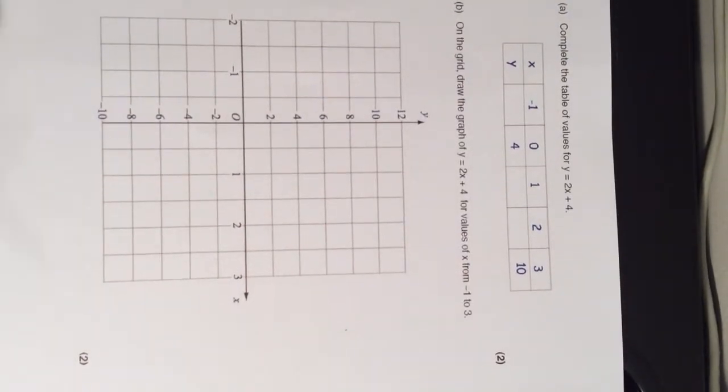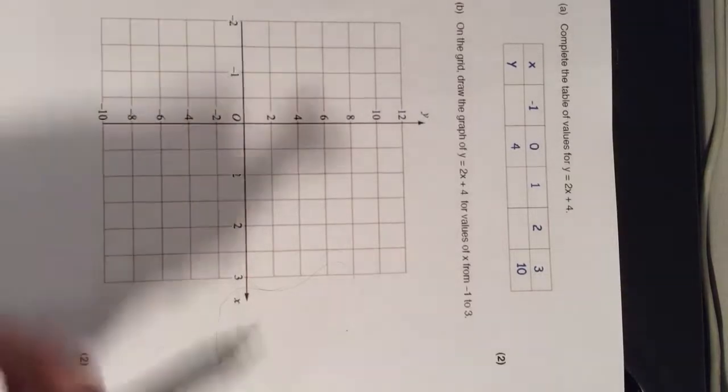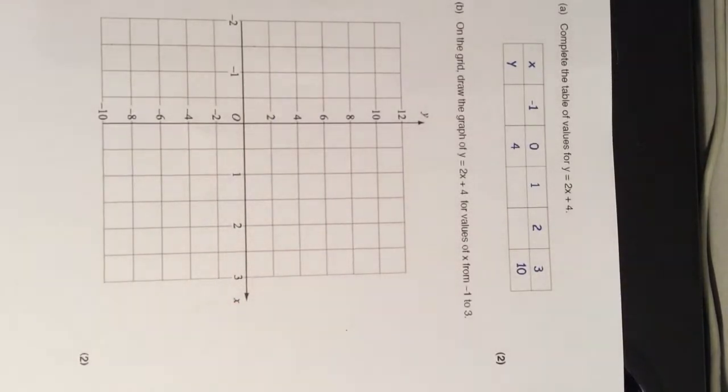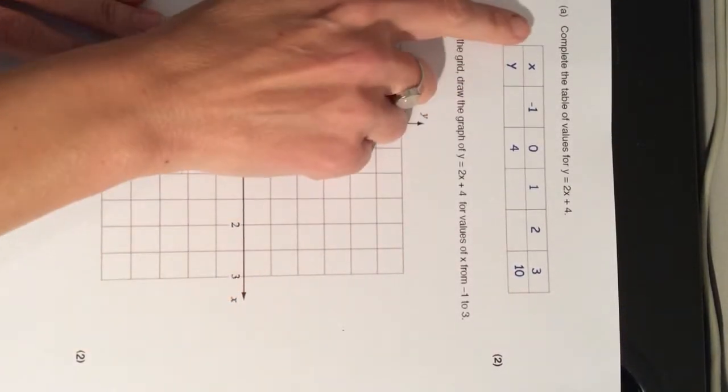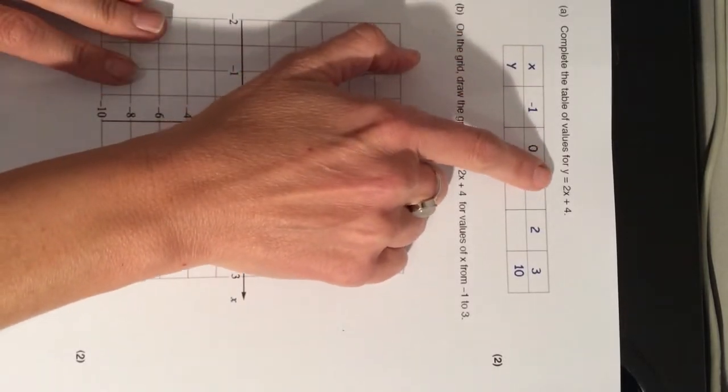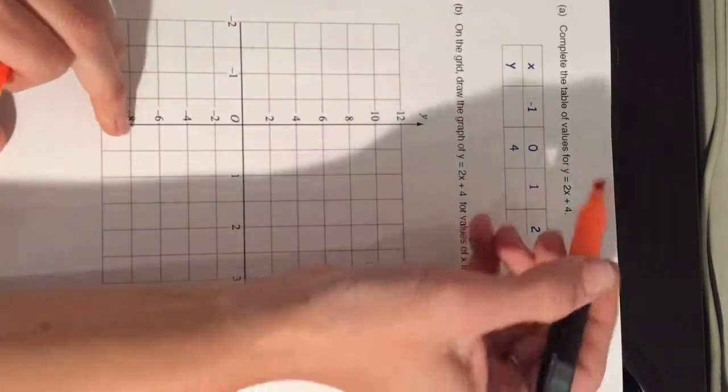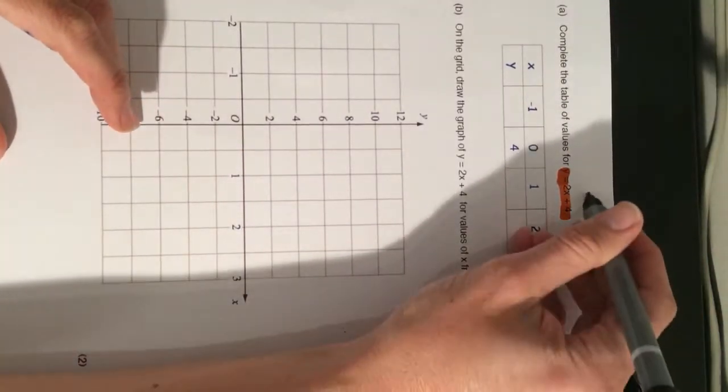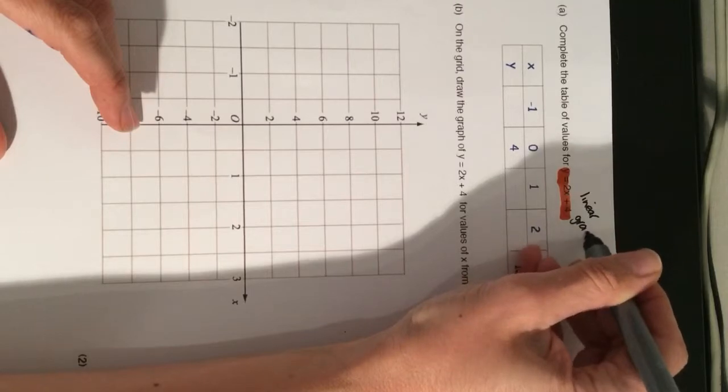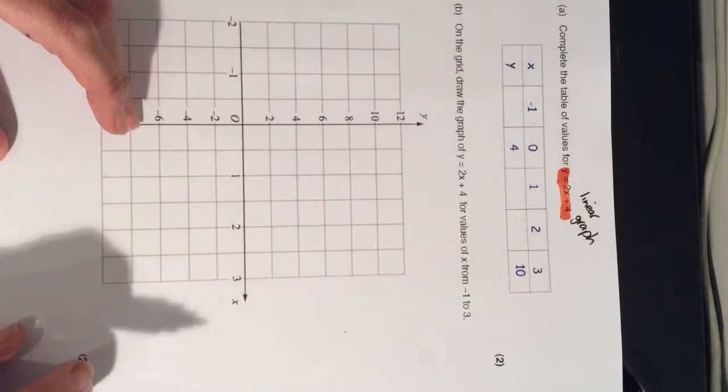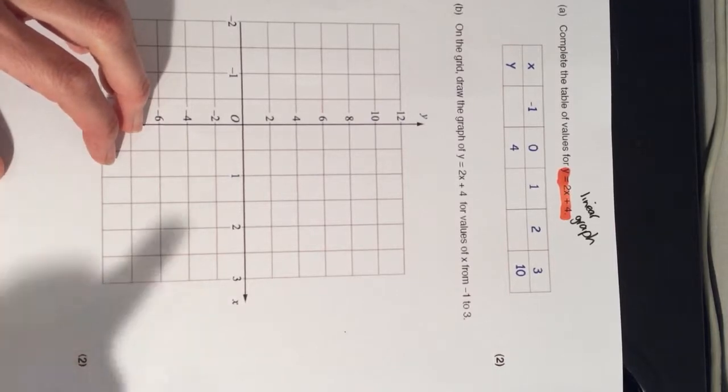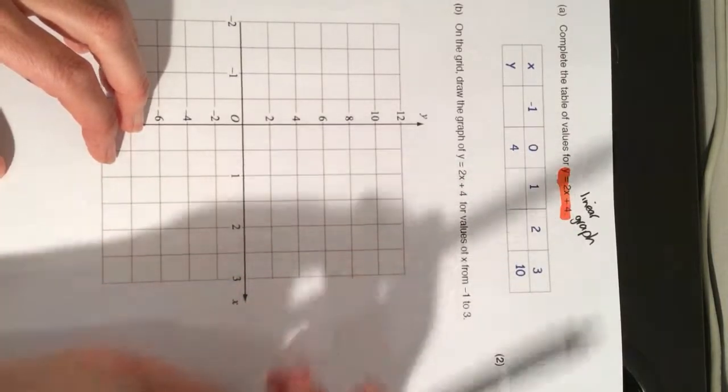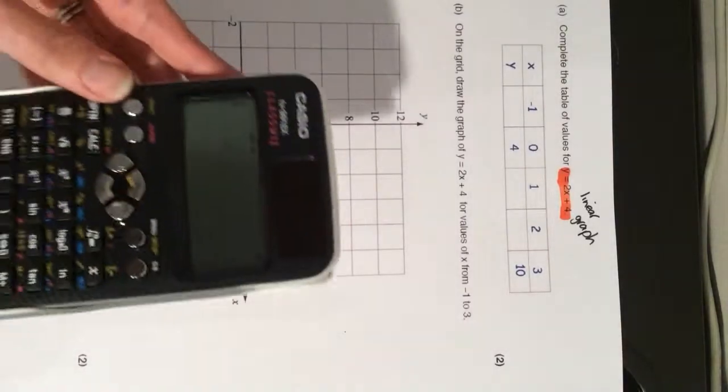I'm going to show you how to use a ClassWiz calculator to help you complete the table of values and ultimately draw a graph from those values. In this question it says complete the table of values for y equals 2x plus 4. This is a linear graph, so we're expecting the graph that we draw to be a straight line when we've finished. Now we could substitute the x values using the calculator into this equation or we could use a technique on the calculator which I'm going to show you now.